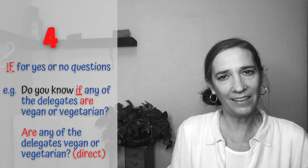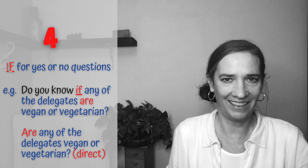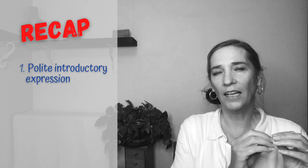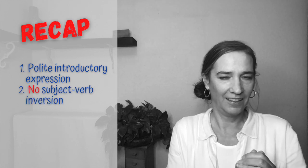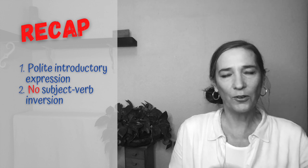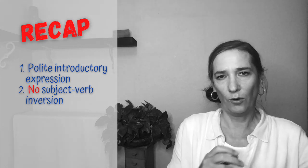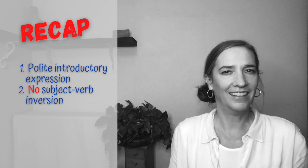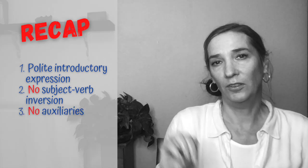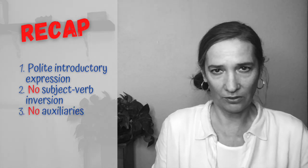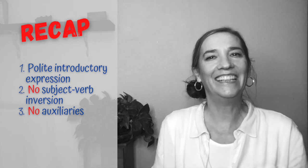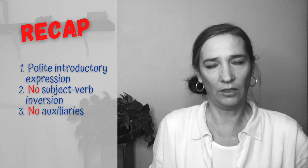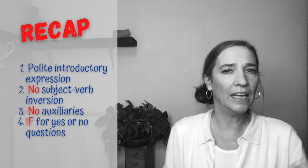We don't use auxiliaries, and we have a polite expression at the beginning. Let's summarize. The first rule for indirect questions is that we need some kind of polite introductory phrase. The second rule is that we don't make the subject-verb inversion — so where is something is the direct question, but where something is is the indirect question. The third rule is that we don't use auxiliaries in indirect questions, so because we're not using auxiliaries, we need to conjugate the verb, using the word order of a statement. And the fourth rule is that for yes or no questions, we use if.